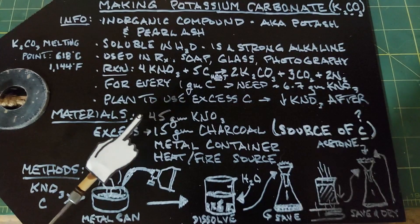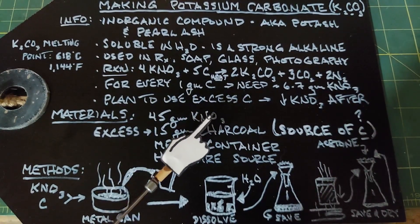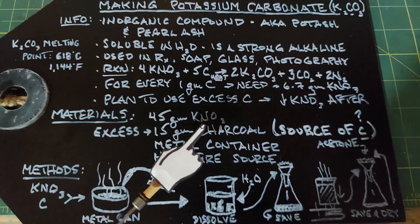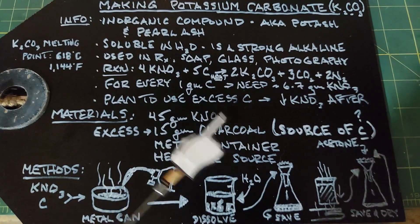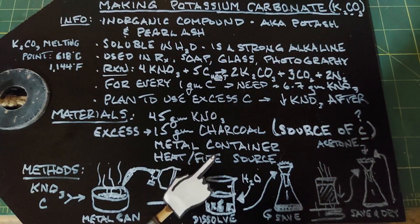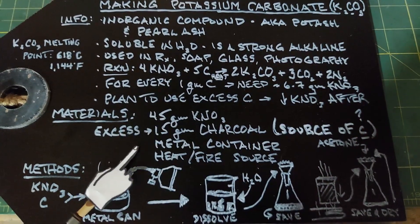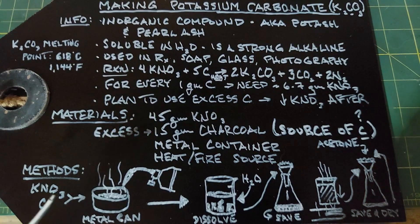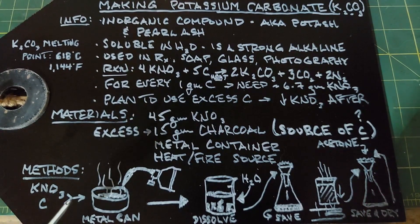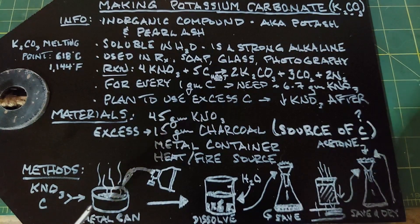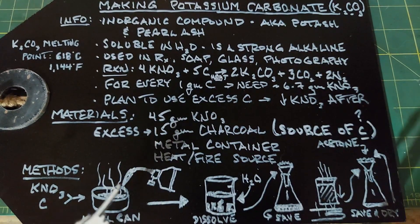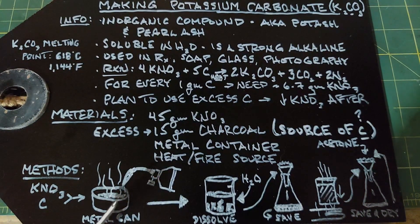Moving on to materials: I'm using 45 grams of potassium nitrate and an excess of charcoal at 15 grams. We'll need a metal container and a heat or fire source. The method is straightforward — mix the two powders, put them in a metal can, and burn thoroughly with a blowtorch from both the bottom and the top to produce the potassium carbonate.